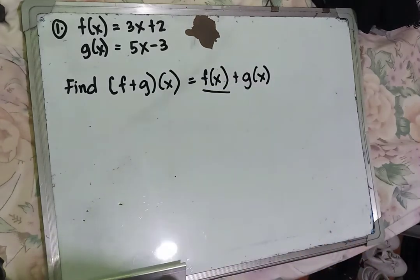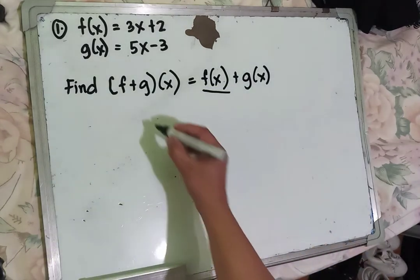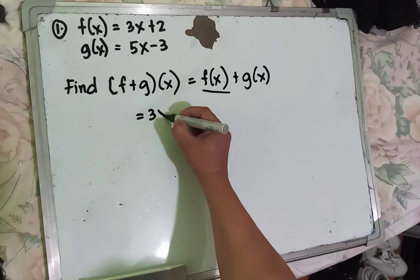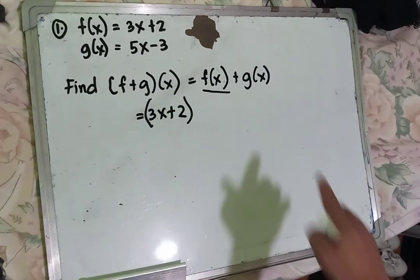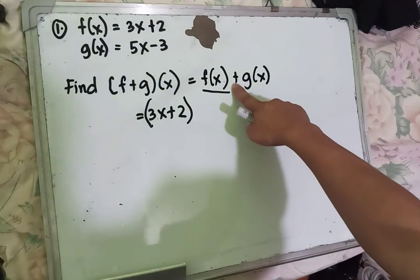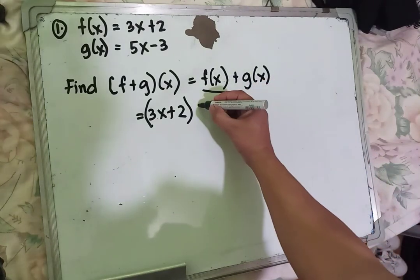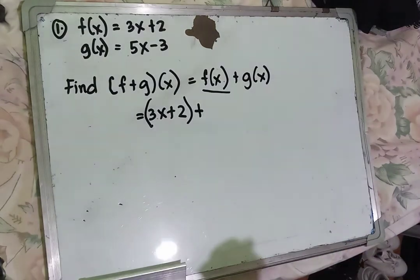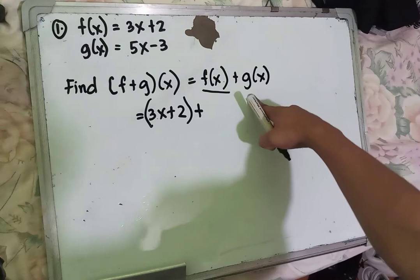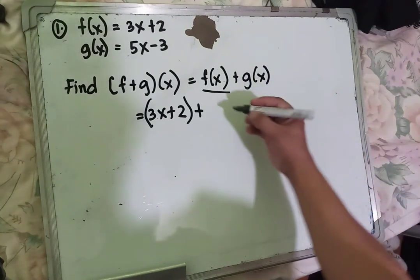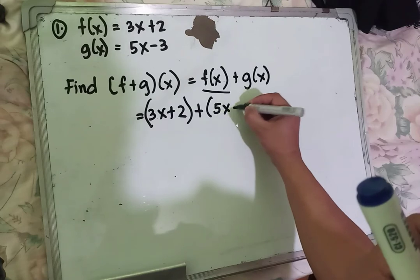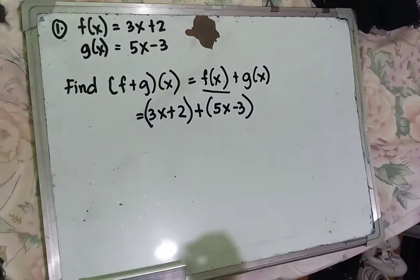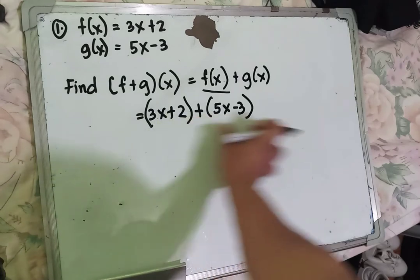The value of f of x is 3x plus 2. For g of x, we use the addition sign, and the value of g of x is 5x minus 3. Now we solve this equation.